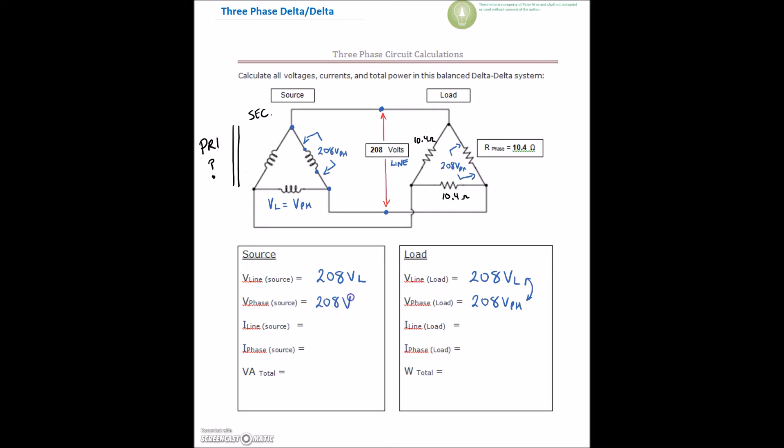And here, this is a mirror image here, so our 208 volts on the phase as well. So if we have a delta source and we have a delta load, they're going to be the same values. It's going to be later on where we have like a Y source and a delta load that the values will be different.